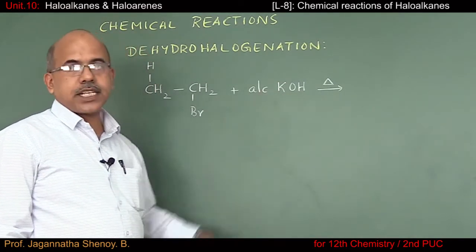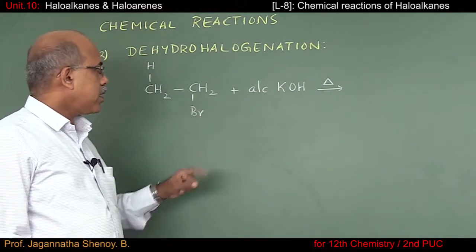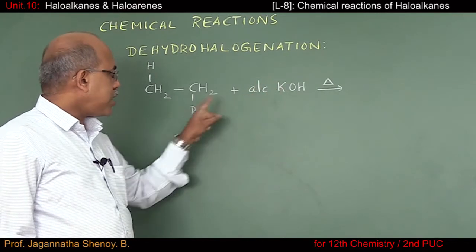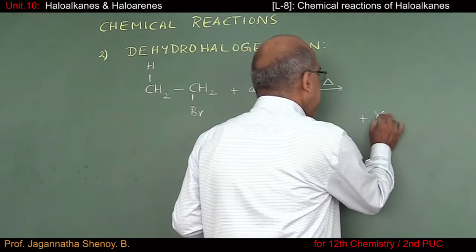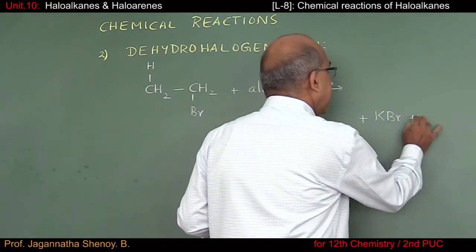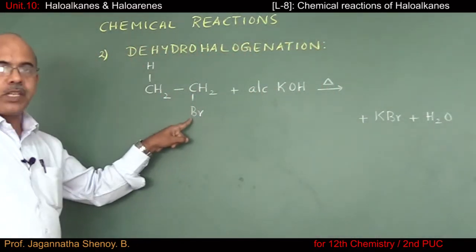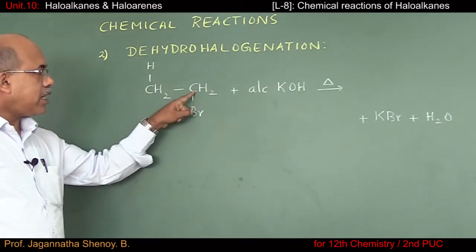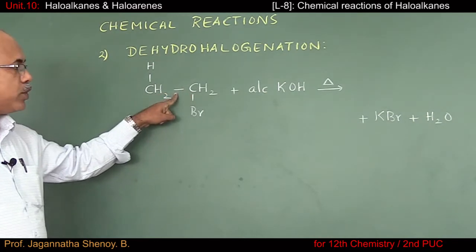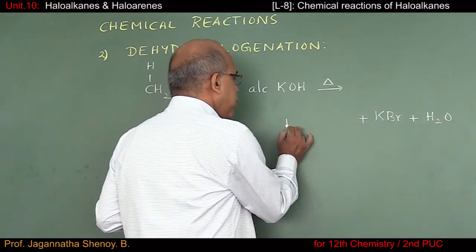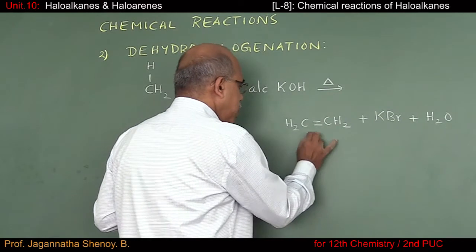HBr is removed. HBr is acidic in nature; it is formed in the presence of a base, so a neutralization reaction takes place, forming salt and water. You get potassium bromide and water as byproducts. Once hydrogen and bromine are removed, to satisfy tetravalency on these two carbon atoms, the single bond gets converted into a double bond.